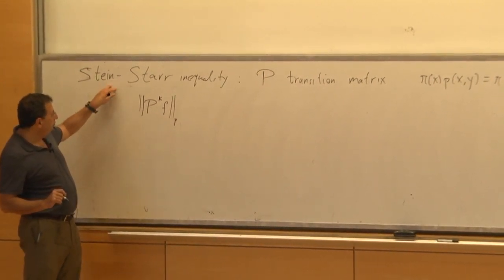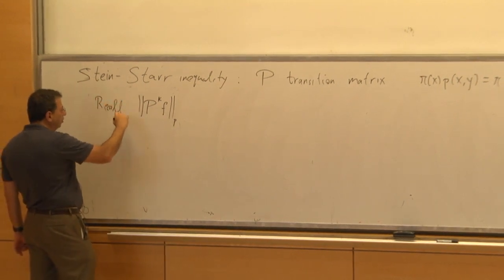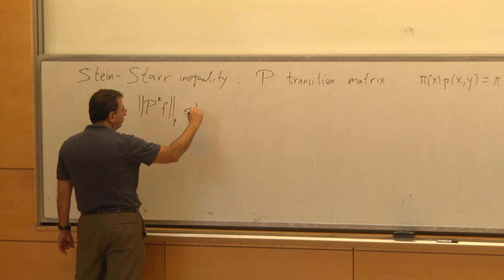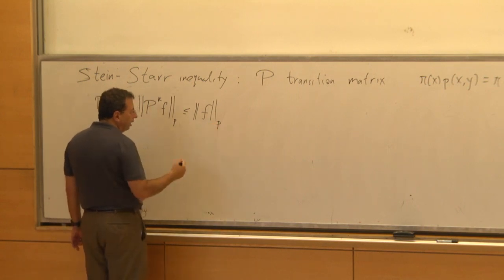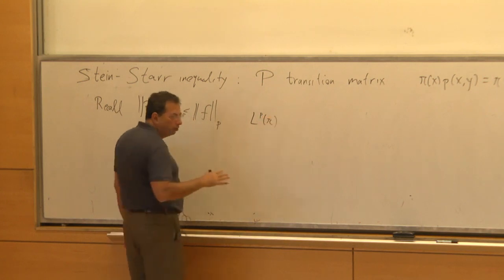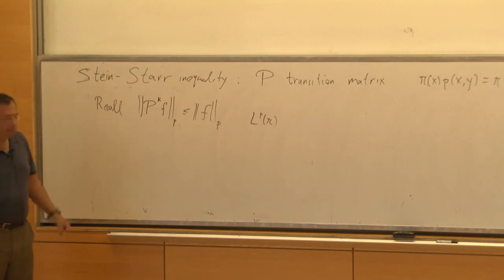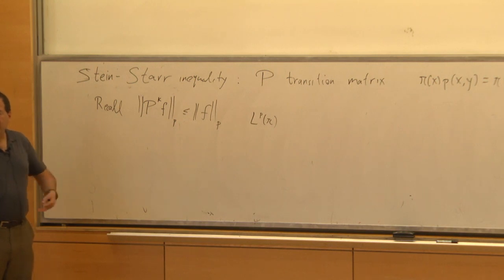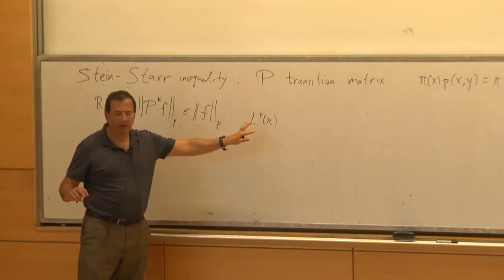Before stating the inequality, just recall the standard fact that P is a contraction, so the norm of P^K F is less than the norm of F. When I write this norm, I mean the norm in the space LP of pi. We're applying this to finite Markov chains, so all this just means you sum — the LP norm to the p is the sum of the p-th powers weighted by pi. We're working in LP of pi, but pi is finitely supported, so everything is elementary.